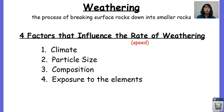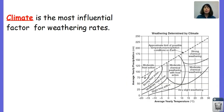Of these four, the most important one that we're going to look at is climate. And that's where we're going to start. Climate is the most influential factor for weathering rates. Now, if you recall, climate is the average temperature and precipitation of a region, or moisture content.